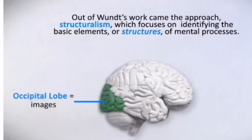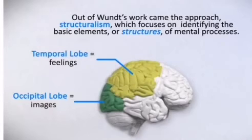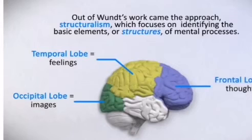The occipital lobe helps to process images. The temporal lobe helps to process feelings. And the frontal lobe helps to process thoughts.